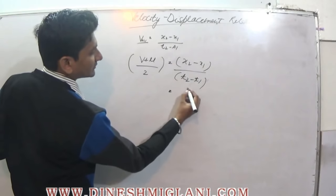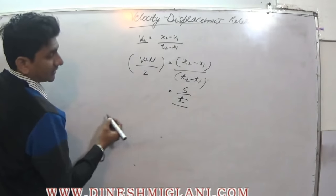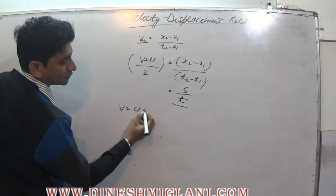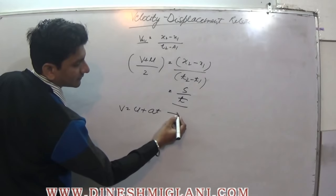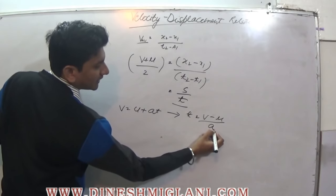So it becomes s upon t. Now from v is equal to u plus at, we have t is equal to v minus u upon a.